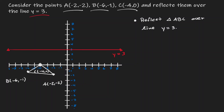Let's concentrate on vertex A. The distance from point A to the line of reflection is 5 units, so to find A prime, let's move 5 units away from the line on the other side. Now let's reflect point B — it is 4 units away from the line of reflection, so B prime is 4 units away on the other side. Now for point C: it is 3 units away from the line, so C prime is 3 units away in the other direction.